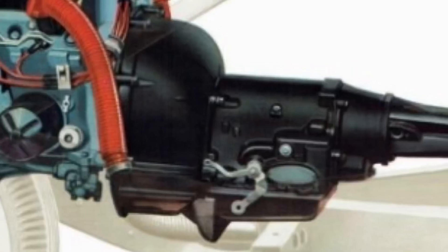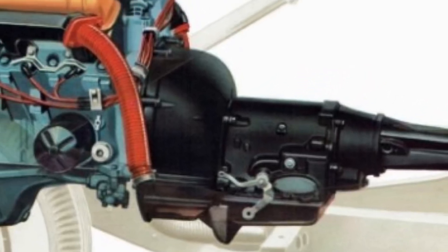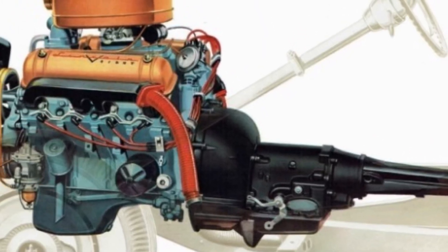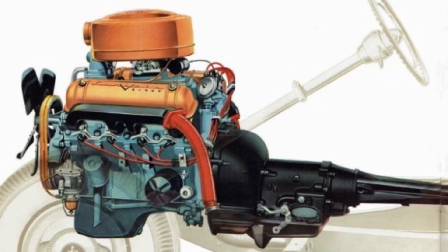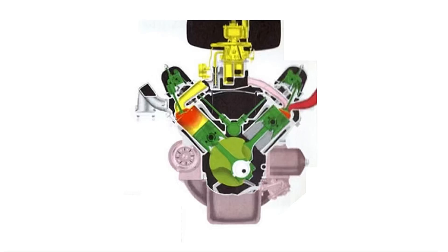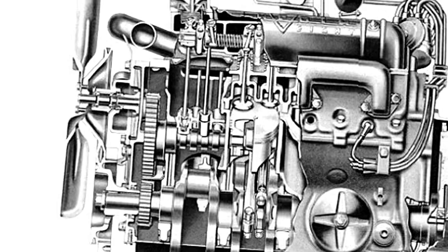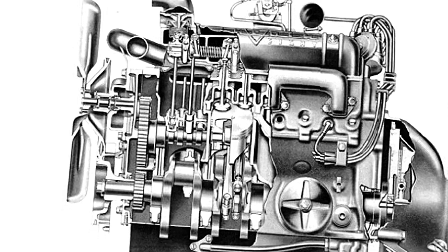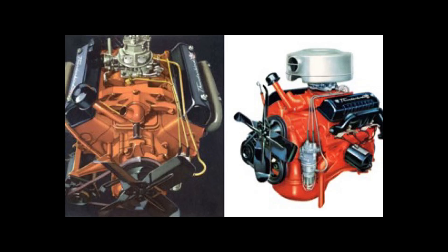The year is 1952. Ford makes its very first overhead valve V8, called the Y-Block because the block's deep skirts gave the engine a Y-shaped appearance — hence the name. It was introduced in 1952 for Lincoln cars and heavy-duty trucks. Don't get this engine confused with the Ford Y-Block. They're two totally different engine families.